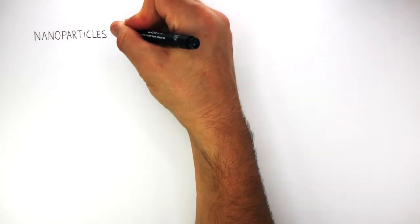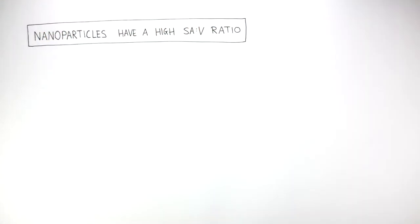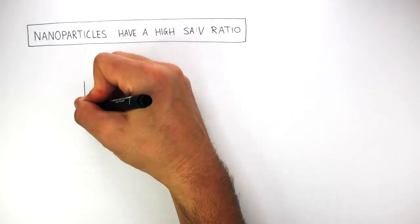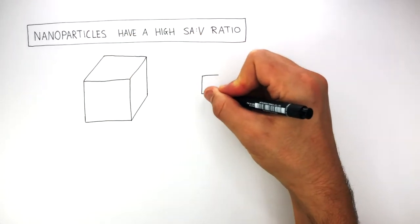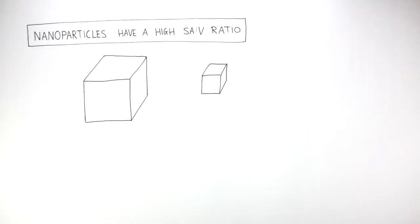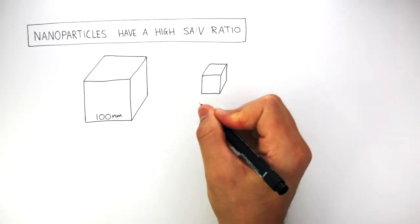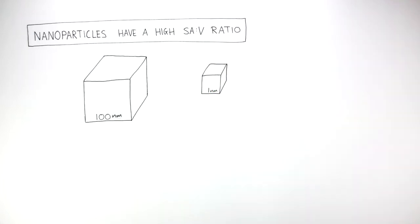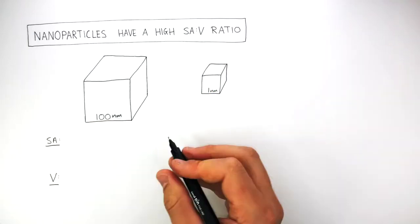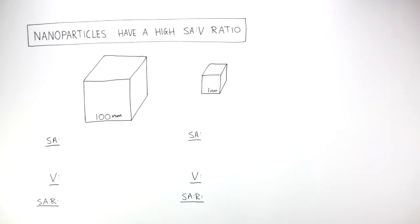Nanoparticles have a high surface area to volume ratio. We can show what we mean by this by drawing two different sized cubes, where the length on one side of the cube is 100 nanometers, and the length on this side of the cube is 1 nanometer. We're now going to use this information to calculate the surface area and volume of each cube.